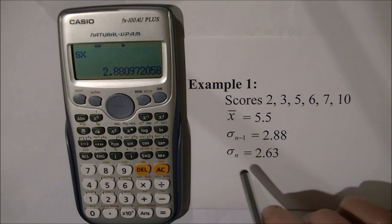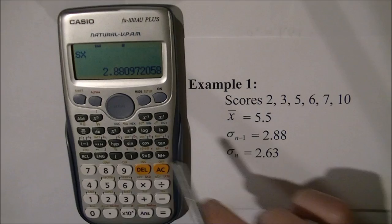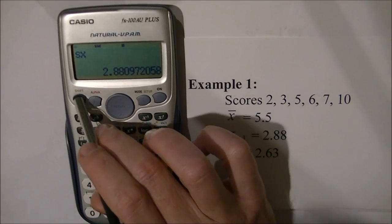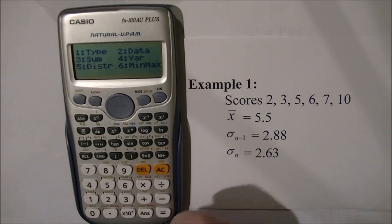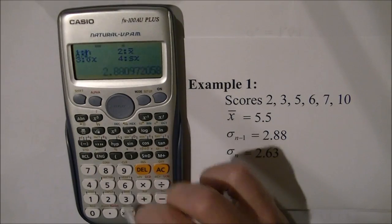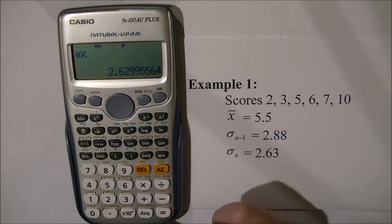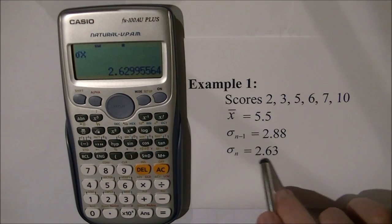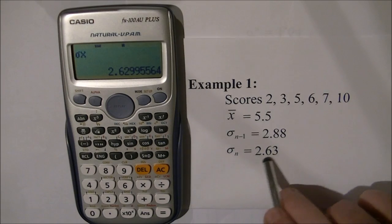Next, I'll find the population deviation. Access the menu again: SHIFT, STAT, variation. The variation I want is the standard deviation, number 3. Press equals. The answer is 2.63, rounded.